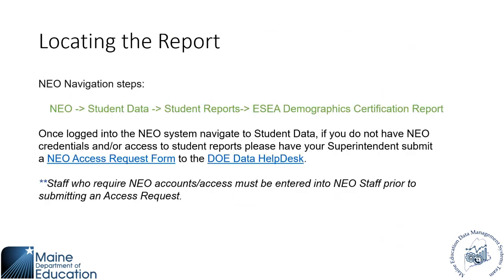In order to locate the report, this report will be in NEO — under student data, then student reports, and then you'll be looking for the ESEA demographic certification report. There will also be a details report. The certification report is going to give you your aggregate counts, and then your details report will go into detail about each student and their specific demographics so you can verify and find any students who may be missing from the count. Anyone who needs access will need to have NEO access. An access request form must be submitted by your superintendent and can be found on the Help Desk website.